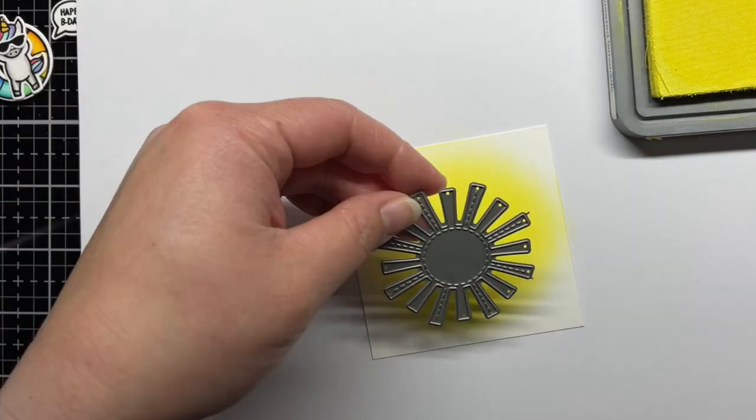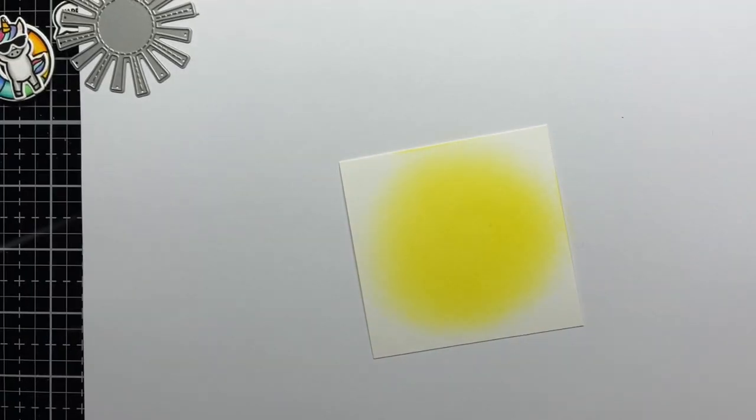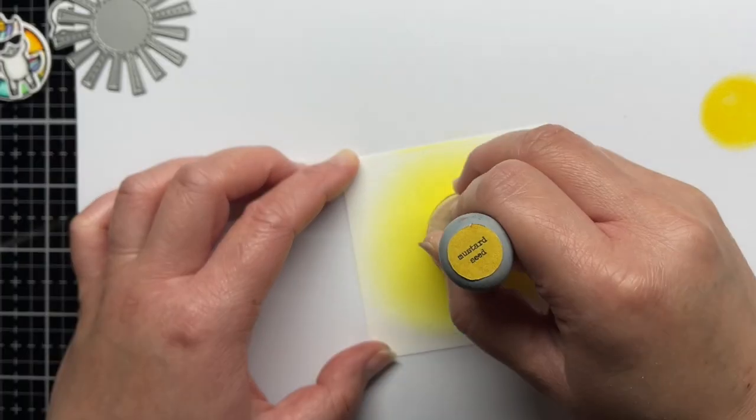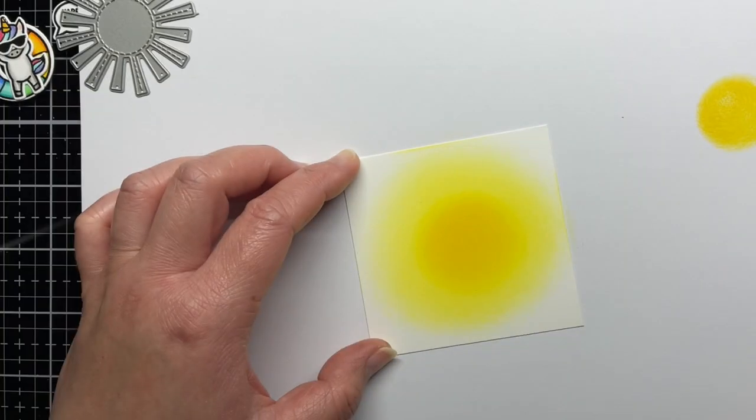I blend squeezed lemonade and mustard seed Distress Oxide ink onto a square of paper for my sun. I let the ink dry before die-cutting my sun.